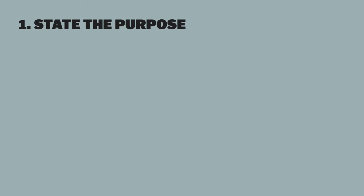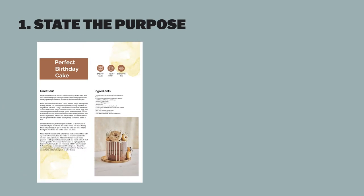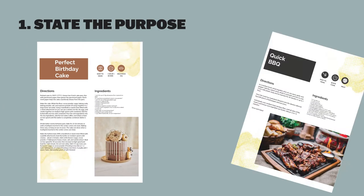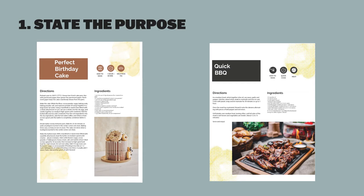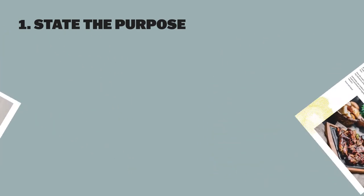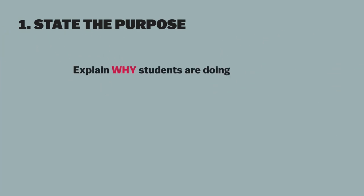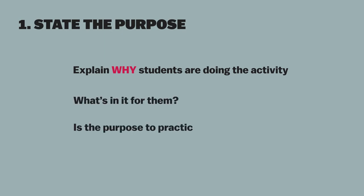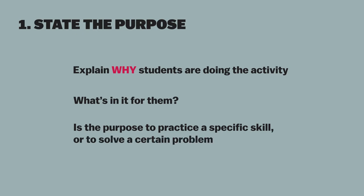Component one: state the purpose. In life, we choose recipes to suit different needs — for example, a birthday cake needs very different ingredients than a barbecue. So explain why students are doing the activity. What's in it for them? Is the purpose to practice a specific skill or to solve a certain problem?